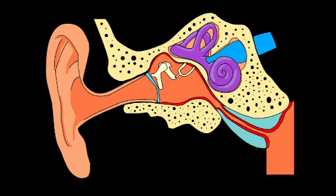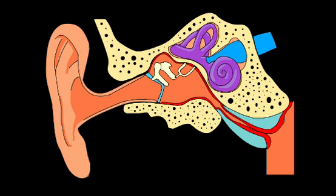To understand glue ear it is helpful to have some knowledge of the anatomy of the middle ear. The middle ear is an air-filled space encapsulated in bone directly behind the eardrum. It is made up of three tiny lever-like bones that carry sound vibrations from the eardrum to the inner ear. The middle ear is connected to the back of the nose by a narrow channel called the eustachian tube. This tube normally remains closed and will only open when you yawn or swallow to allow equalization of middle ear pressure.